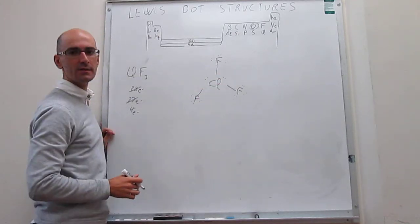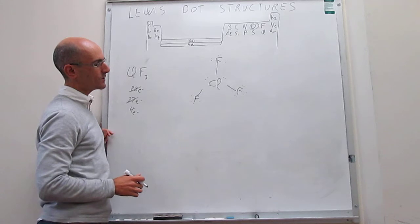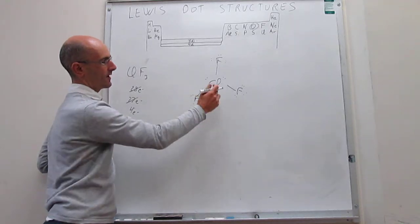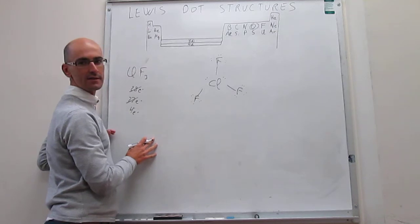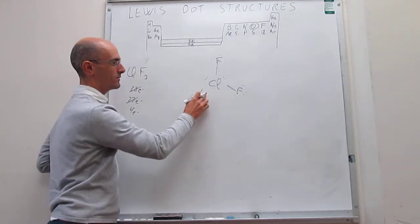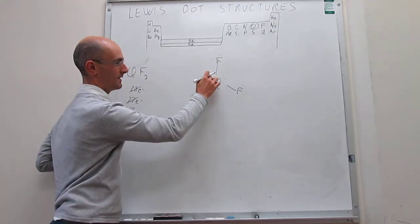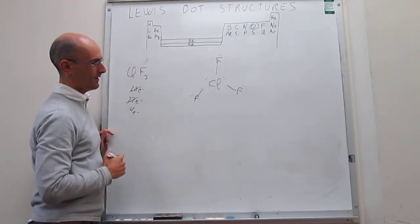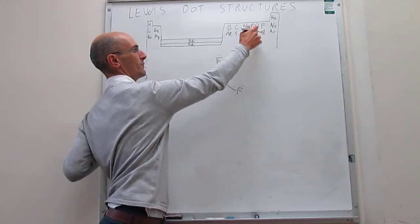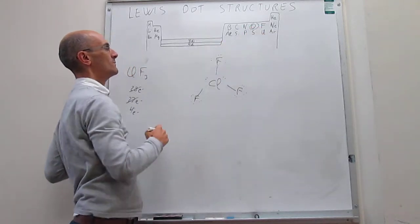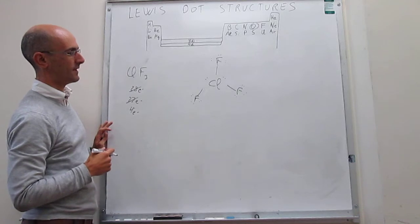When we try to look at the octets right here, we actually see that the fluorine atoms have octets. But then the chlorine atom actually has 10 electrons, 2, 4, 6, 8, and then 10. So that is an expanded octet for chlorine. And that is fine because chlorine is in the third row or below. So it can engage the empty orbitals that are close in energy.